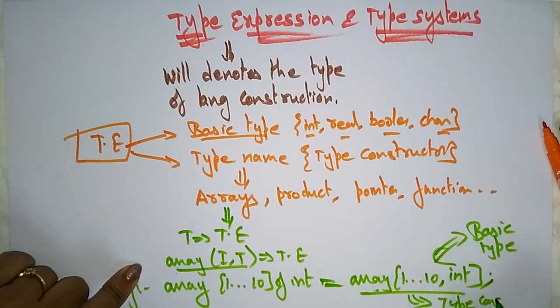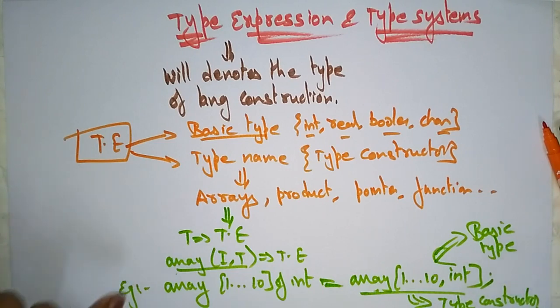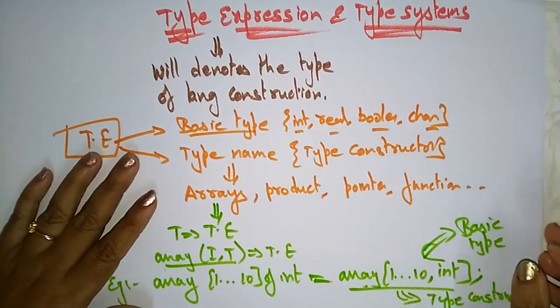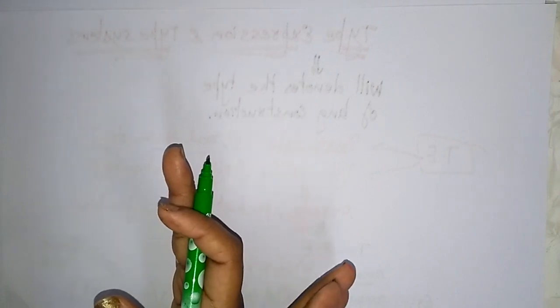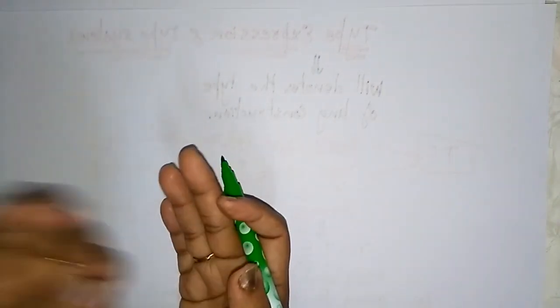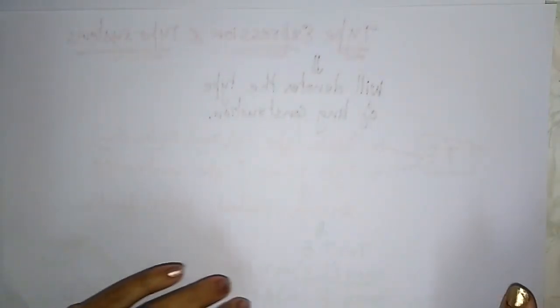I want to show you the difference between basic types and type constructors. For functions, the domain and range of the function are denoted by its type expression. For pointers, if t is a type expression, then pointer(t) is a type expression which points to an object of type t. Whatever variables you use — in a function, array, or pointer — that complete structure is also called a type expression.